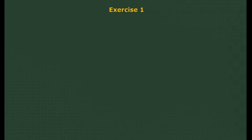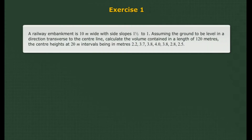Problem: A railway embankment is 10 metres wide with side slopes 1.5 to 1. Assuming the ground to be level in a direction transverse to the centre line, calculate the volume contained in a length of 120 metres. The centre heights at 20 metre intervals being in metres: 2.2, 3.7, 3.8, 4.0, 3.8, 2.8, 2.5.